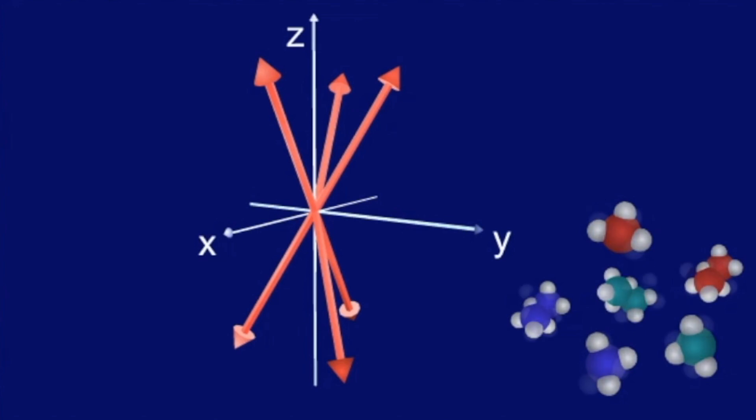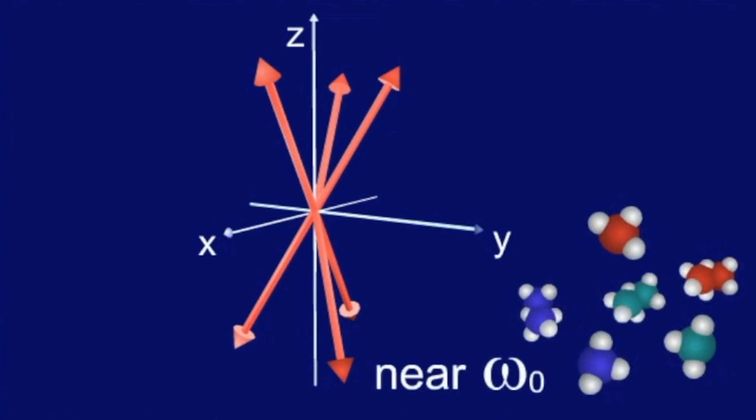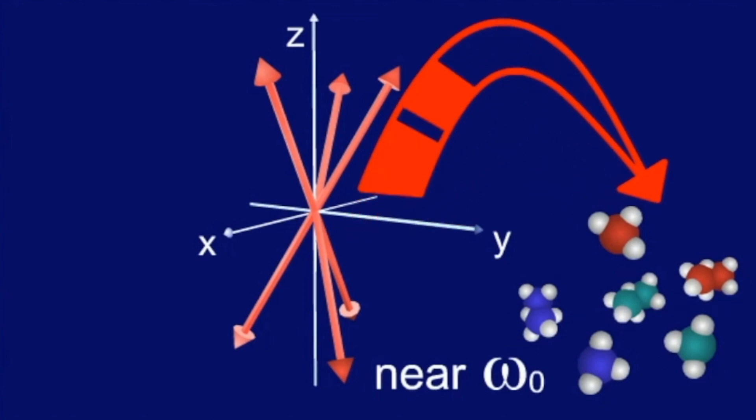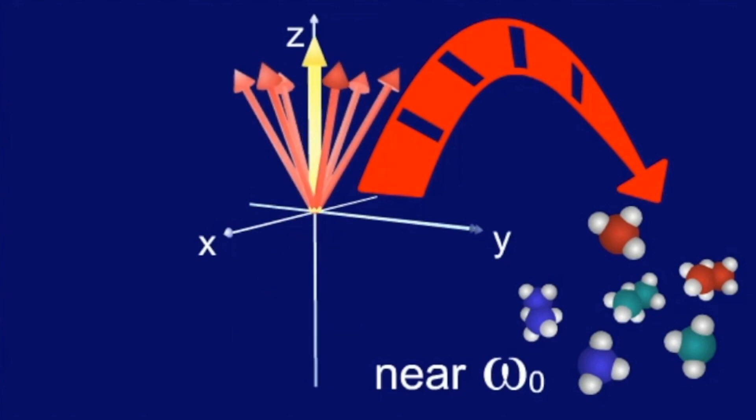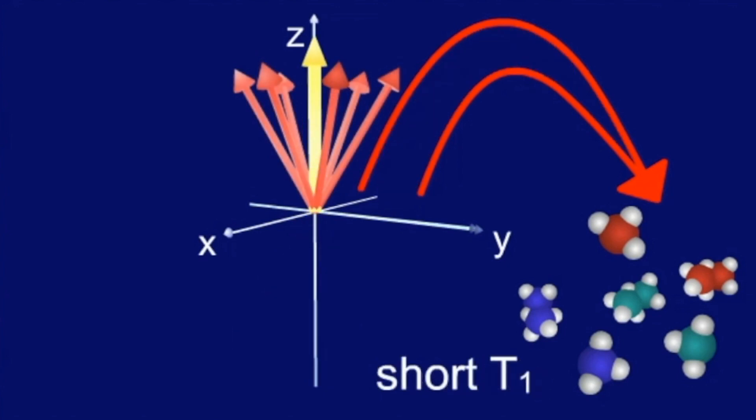that move and have fluctuating magnetic fields near the Larmor frequency of the precessing protons, energy can be transferred much faster. Thus, T1 is short.